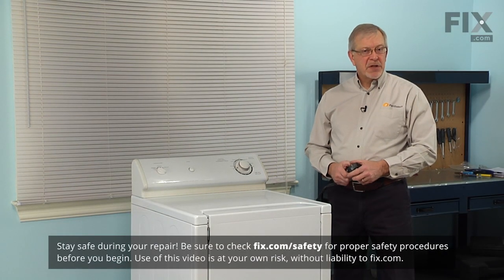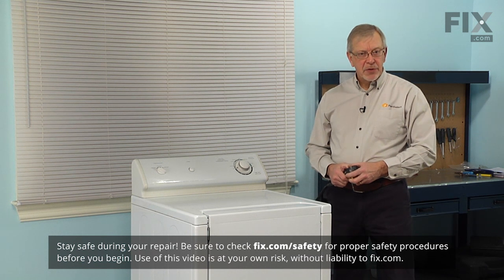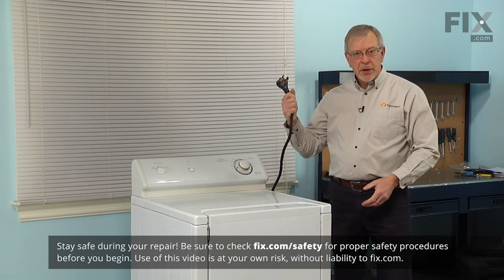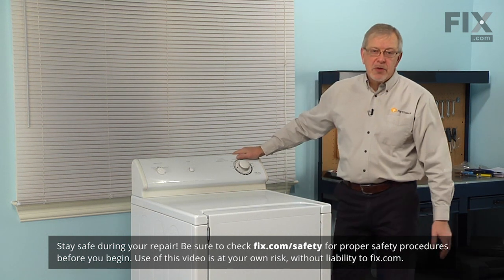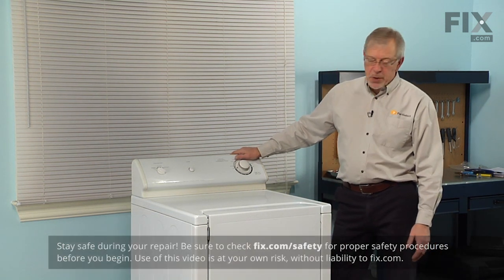Now before we begin this repair, the first thing we're going to need to do is to disconnect power to the dryer. Simply locate the cord and unplug it from the receptacle, or if it's a hard-wired dryer, locate the fuse panel or breaker panel and disconnect the power at that source.